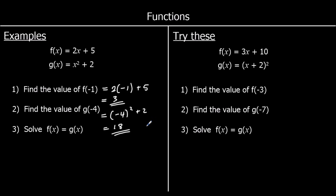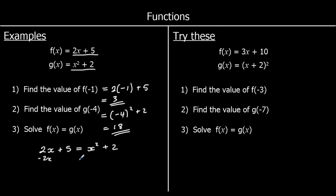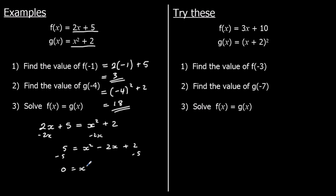Question 3: Solve f(x) = g(x). So f(x) is 2x plus 5, and g(x) is x squared plus 2. So we're going to get 2x plus 5 equals x squared plus 2. We've got a quadratic, so we're going to make it equal to 0 to solve it. We're going to take 2x away from both sides, so we've got 5 equals x squared minus 2x plus 2. Then take 5 away from both sides, which gives x squared minus 2x minus 3 equals 0.